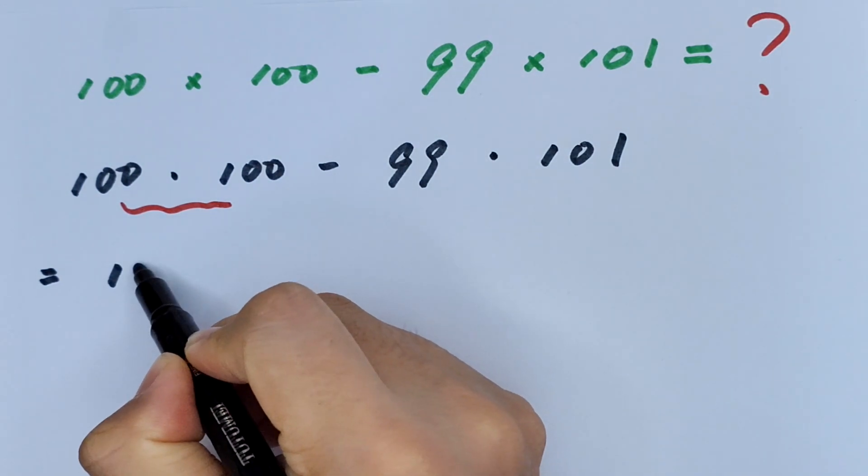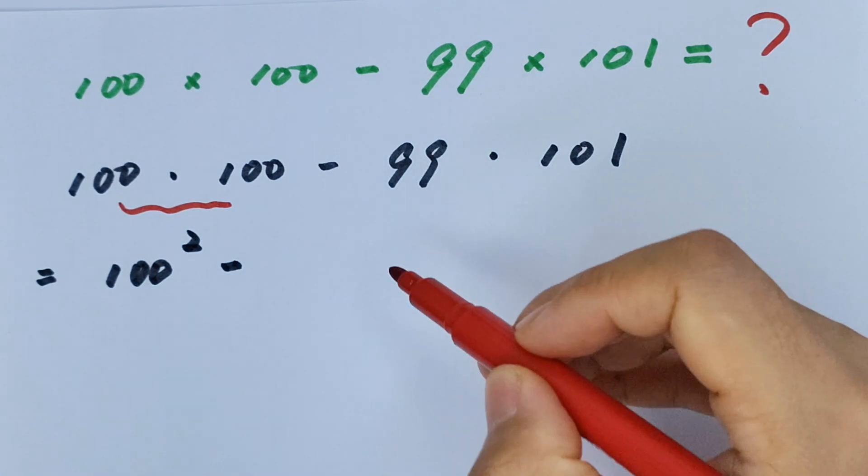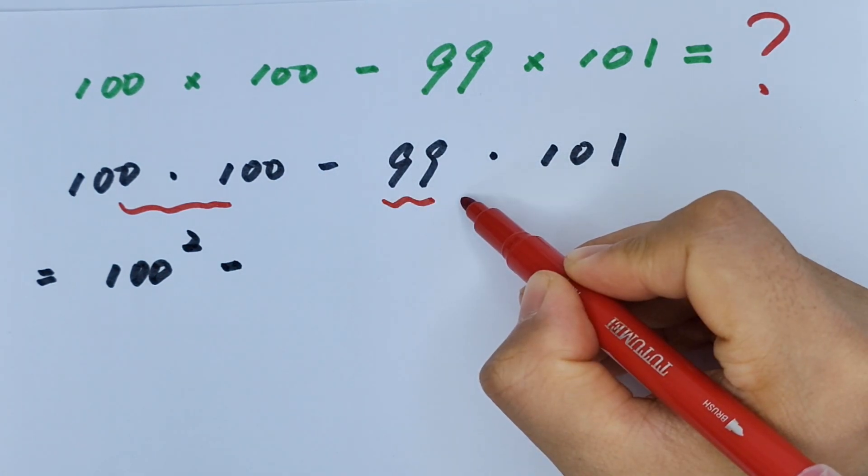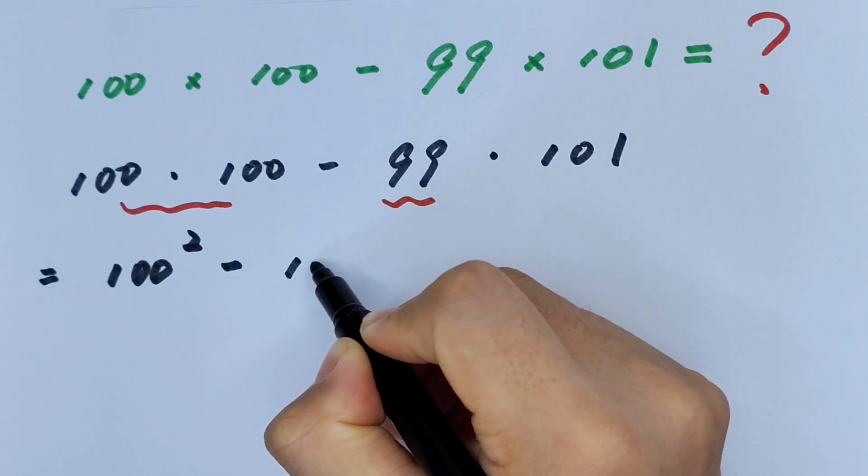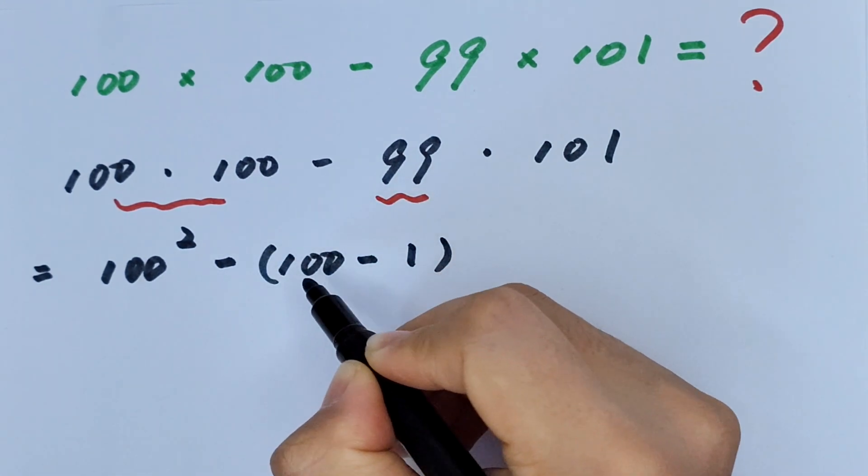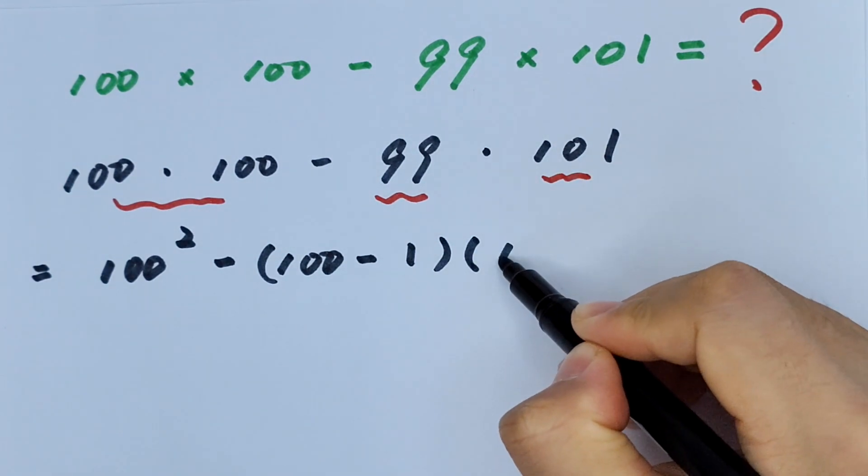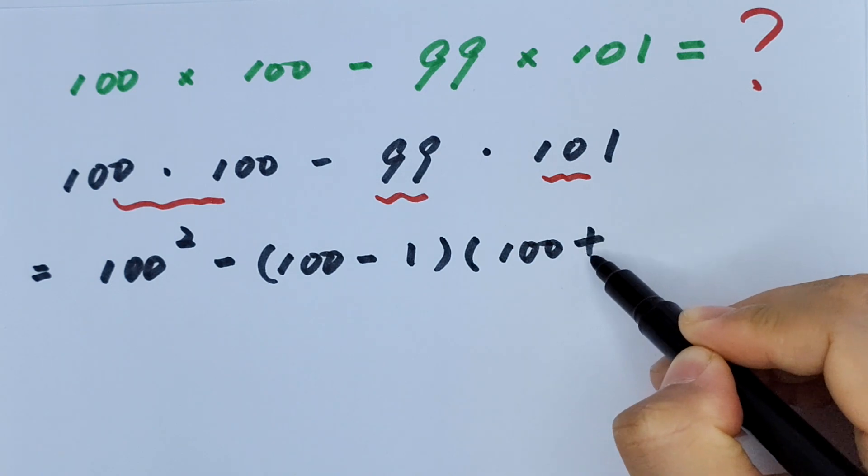100 squared minus 99, which is 100 minus 1 in brackets, times 100 plus 1.